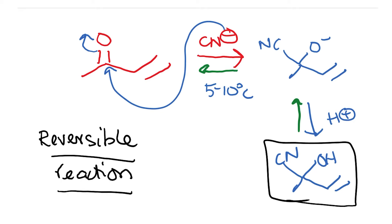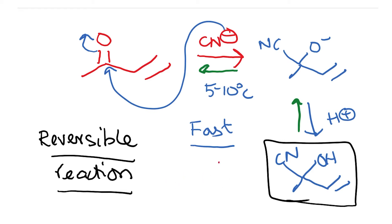When you dissolve the cyanohydrin in an organic solvent, it is possible to get some starting material and cyanide back. Therefore, what we can suggest is that the first step here is a fast reaction. It is a reversible reaction and it is a fast reaction. This helps us understand what happens at somewhere between 5 and 10 degrees centigrade.